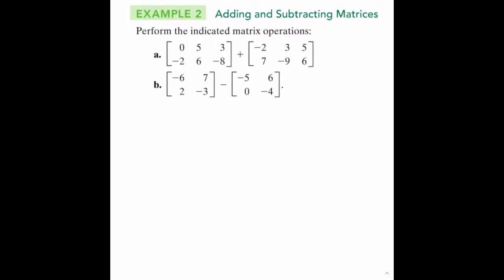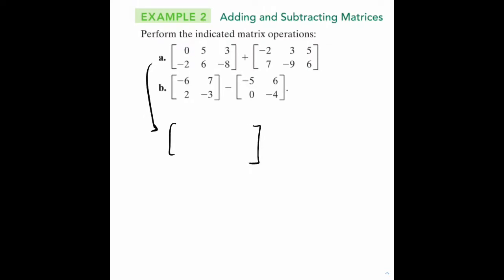Now let's go to the next one - adding and subtracting matrices. This is pretty intuitive. For A, you copy the same dimensions (2 by 3) and add the appropriate elements. 0 adds to negative 2, that's negative 2. 5 adds to 3, that's 8. 3 adds to 5, that's 8. Next row: 5, negative 3, negative 2. Notice how we're just matching these up.